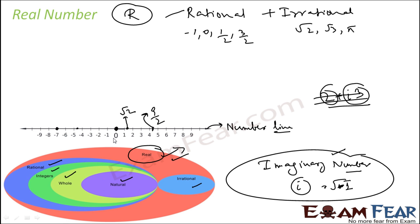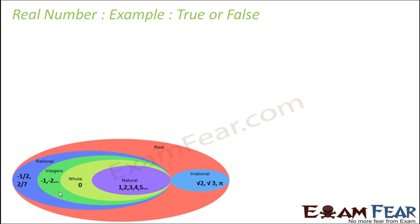Let me quickly brush up all these concepts. Natural numbers are something you can count on fingers: 1, 2, 3, 4 — minus 1, minus 2, 0 are not natural numbers. Whole numbers add 0 to the natural numbers. Then we have integers, which include negative numbers as well. Rational numbers can be written in the form p/q. Note that minus 1, minus 2, minus 3 are also rational numbers because minus 1 can be written as minus 1/1. Irrational numbers like root 2, root 3, and pi cannot be written in p/q form. Rational and irrational numbers combined form real numbers.